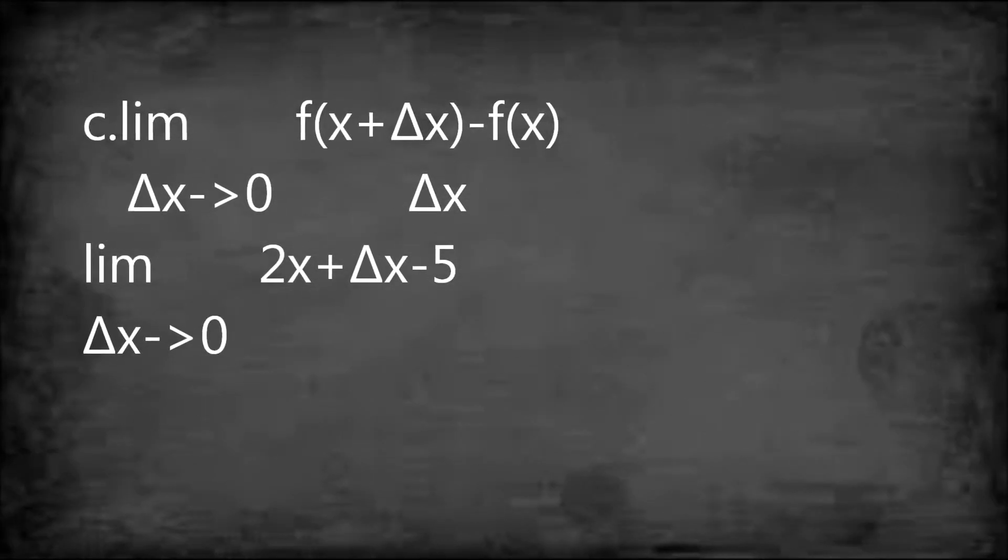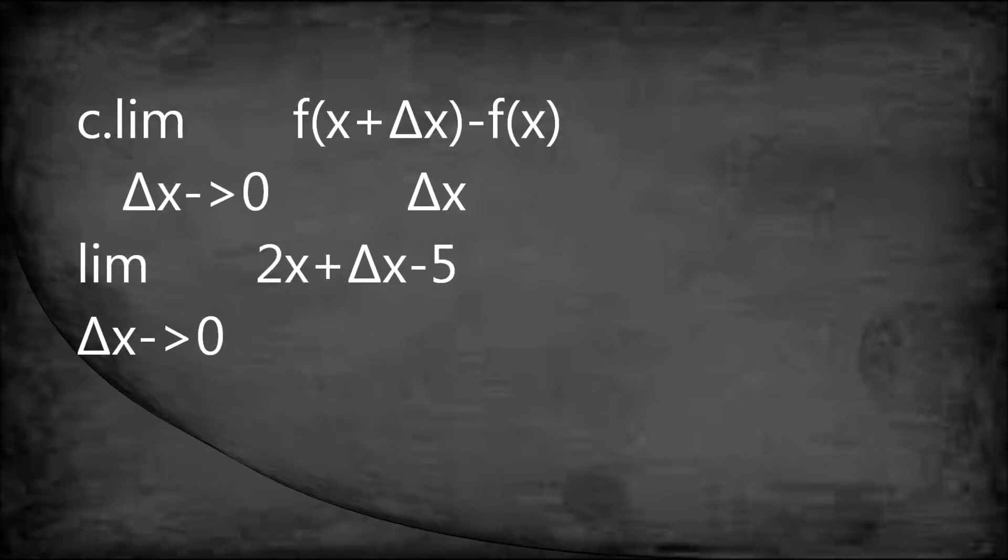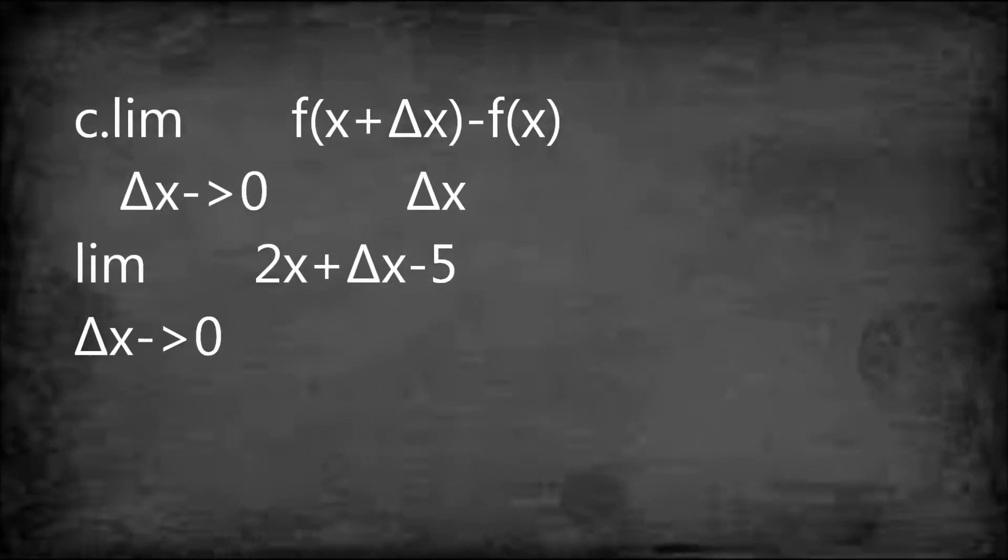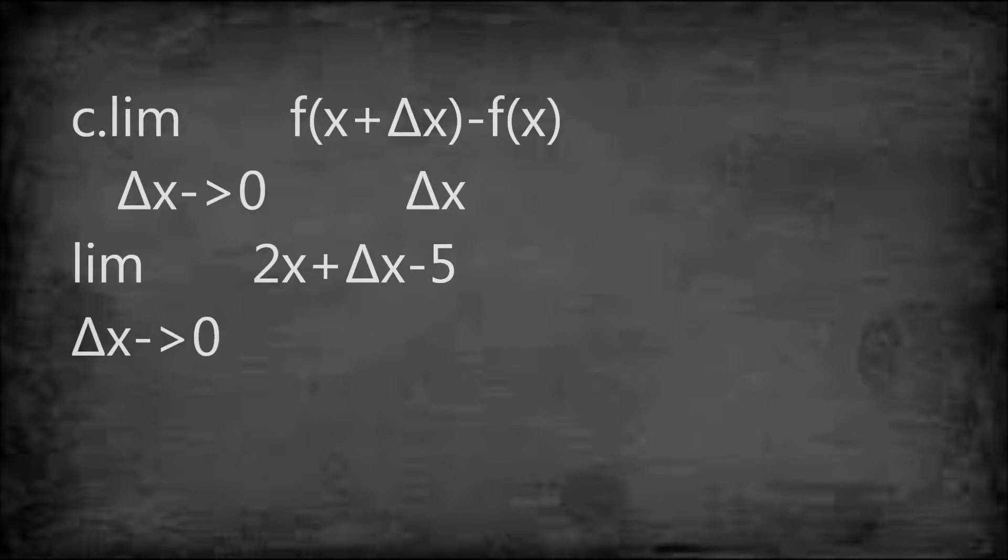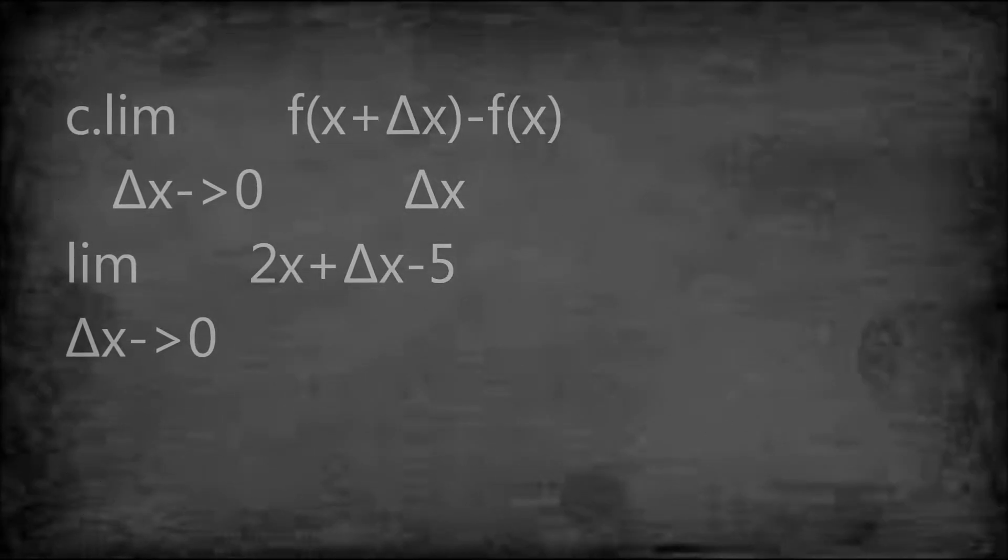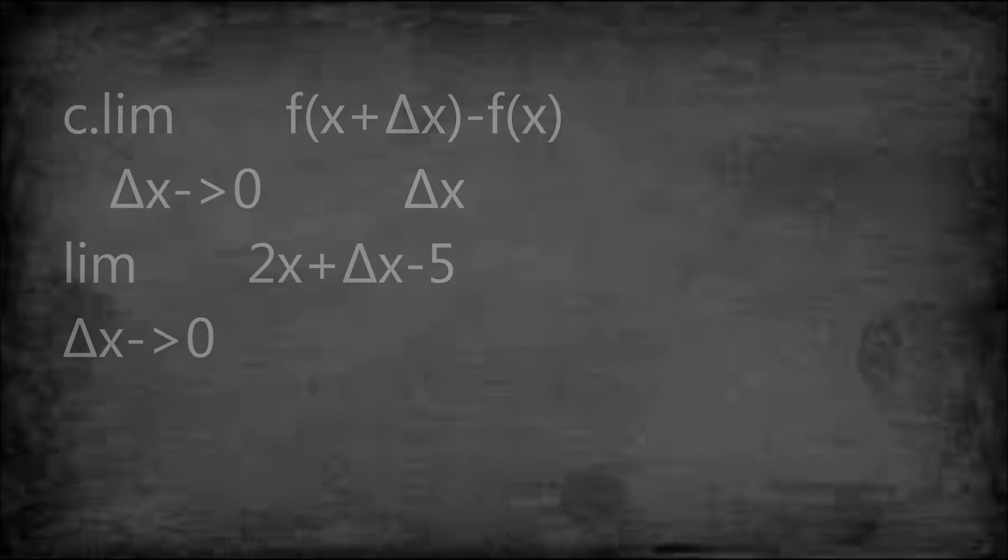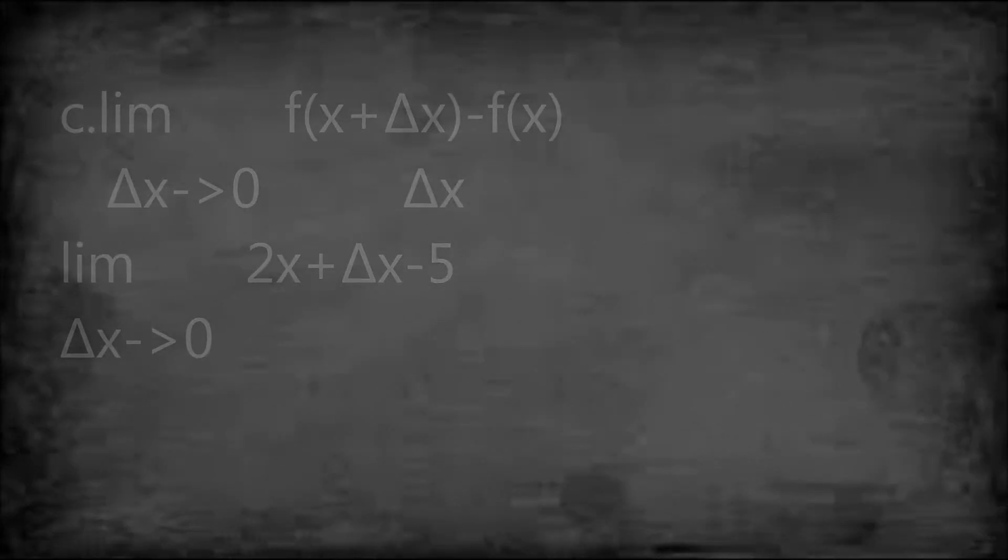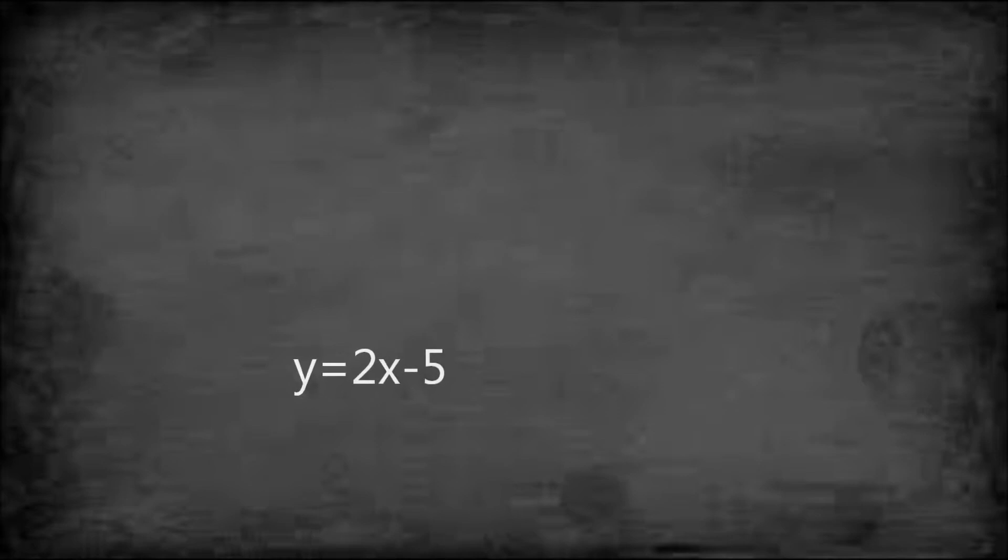As stated, delta x approaches zero, so we substitute zero for delta x. The result is 2x plus 0 minus 5. So simply, your final answer will be 2x minus 5. That is your derivative.